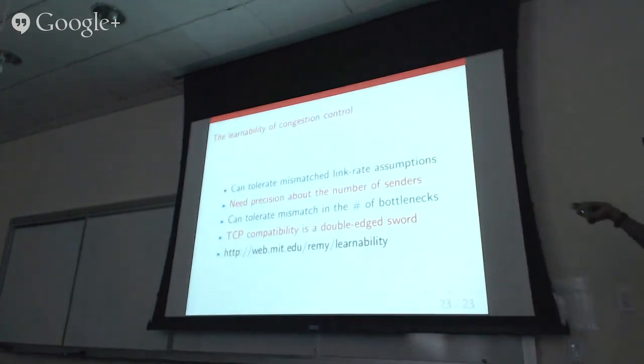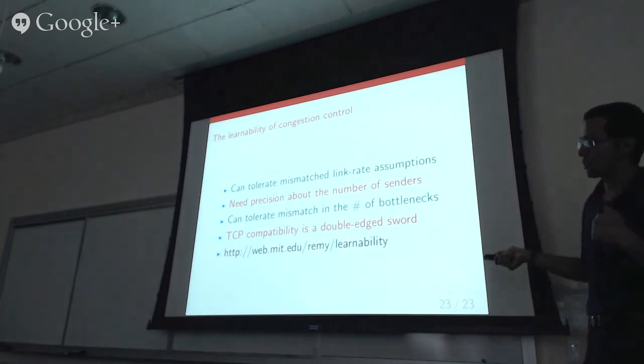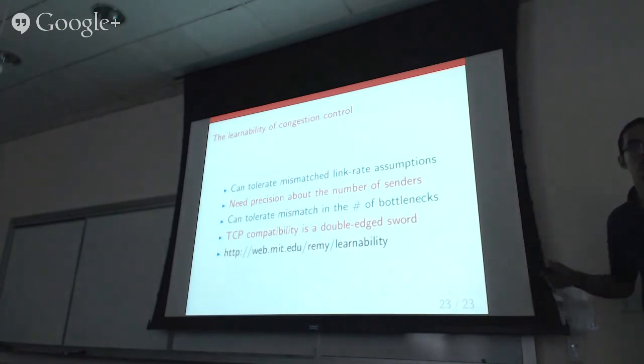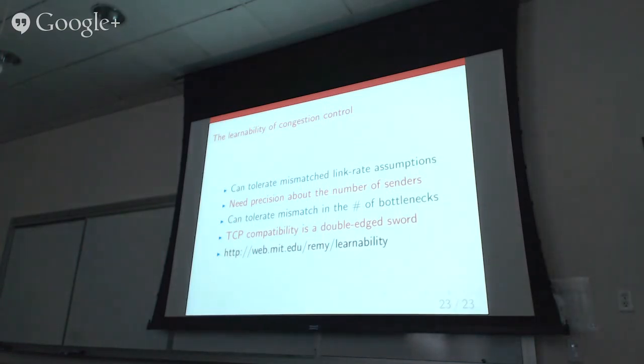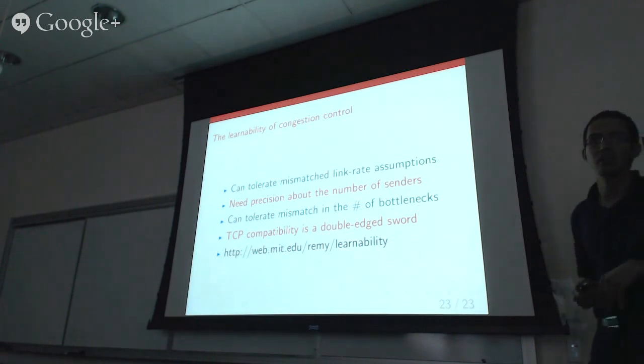In summary: we can tolerate some mismatch in link rate assumptions; we need to be precise about the number of senders; within the scope of these experiments, we can tolerate some mismatch in the number of bottlenecks; and TCP compatibility is a double-edged sword — it helps you play fairly with TCP in heterogeneous settings but increases queuing delay when running alone. All figures in the paper are reproducible. Thanks, happy to take questions.